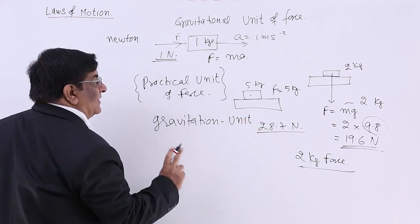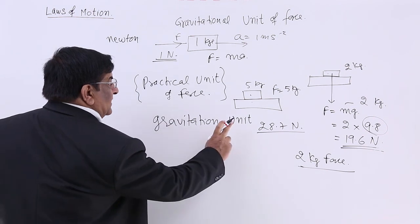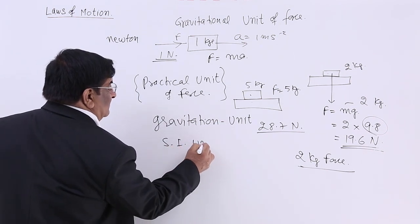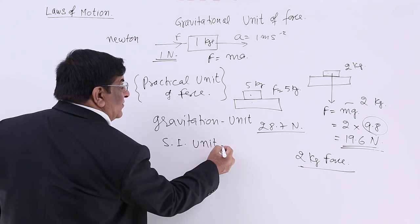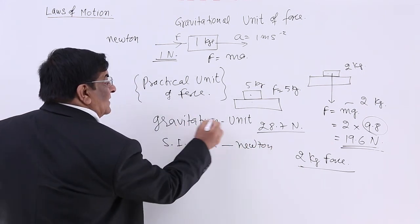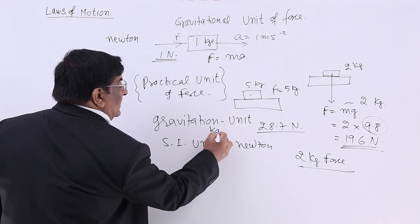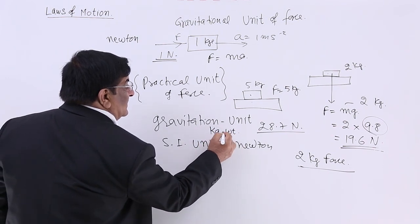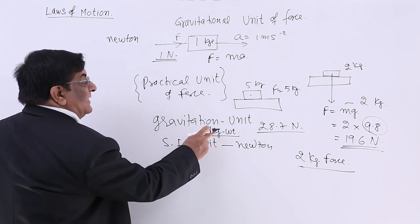So there are two systems: one is gravitational unit and one is SI unit. SI unit is Newton, and gravitational unit is kg weight. This is what we are going to use, kg weight.